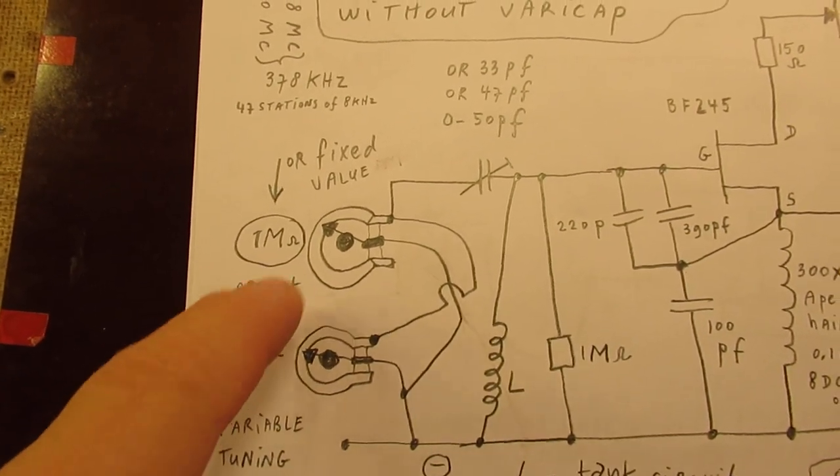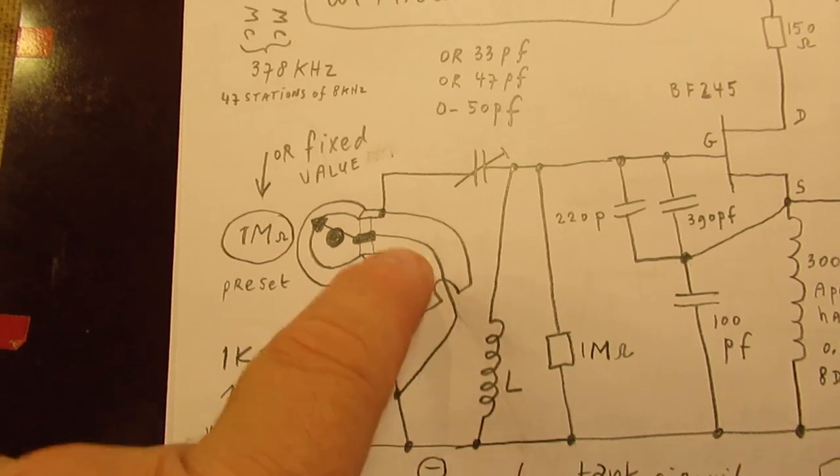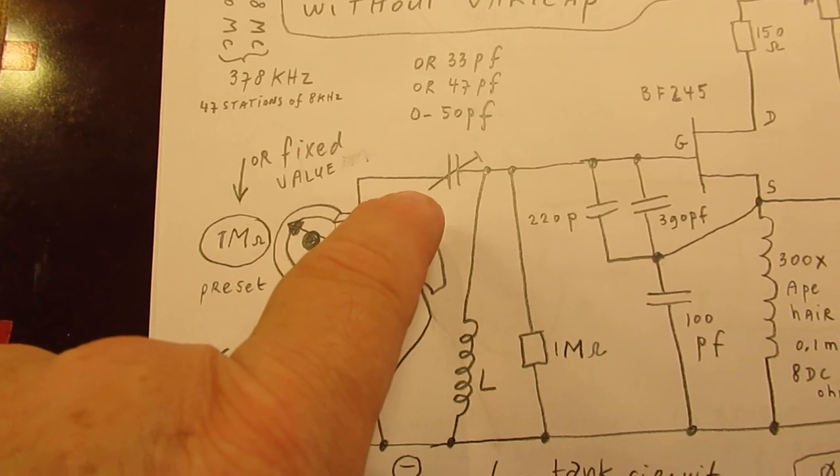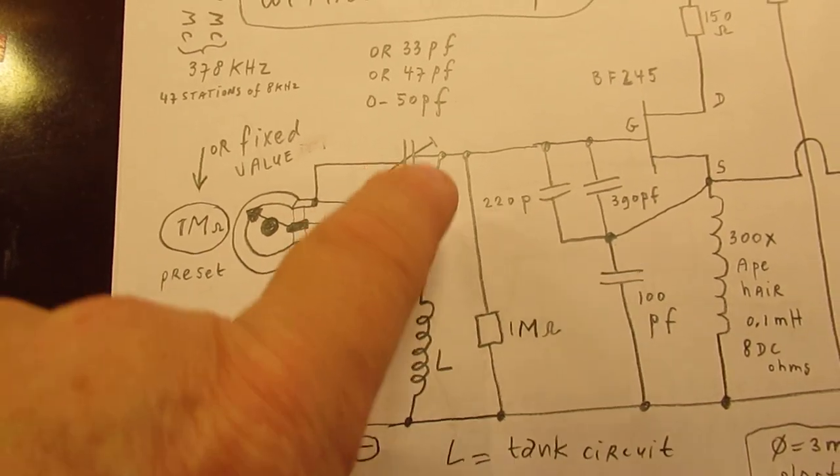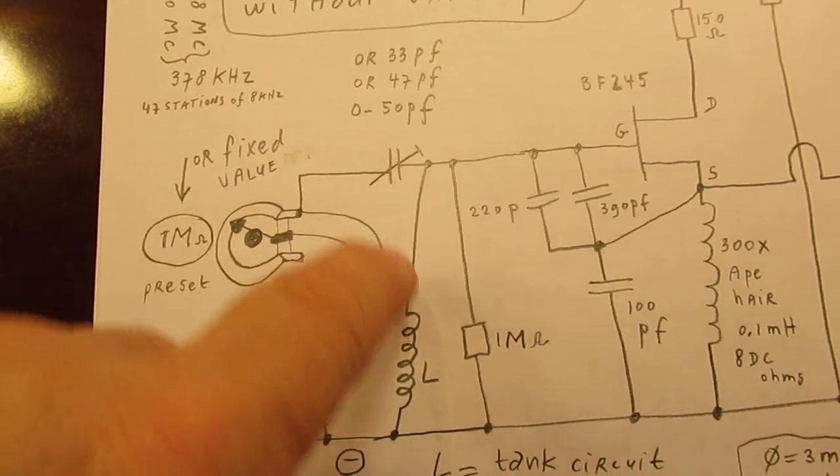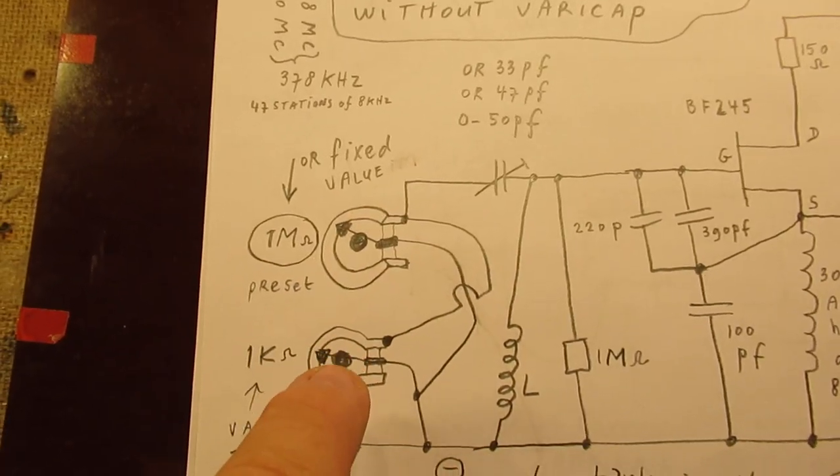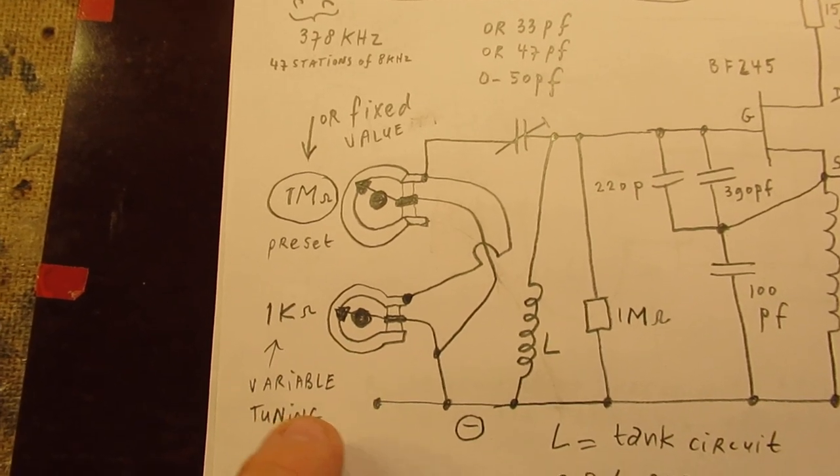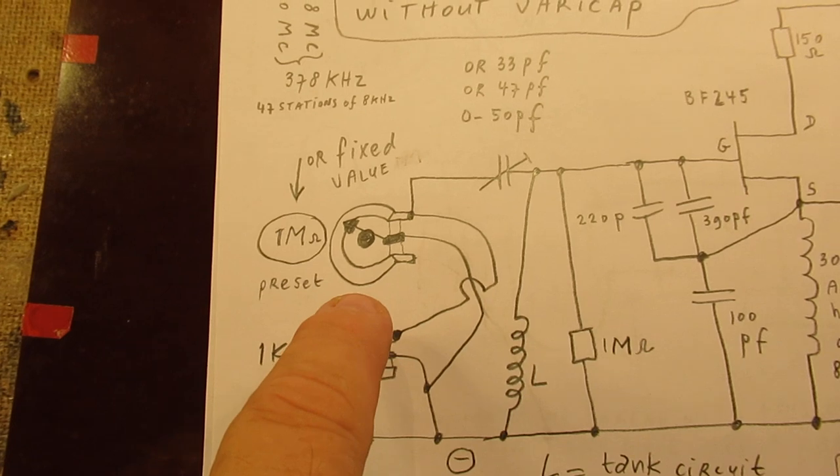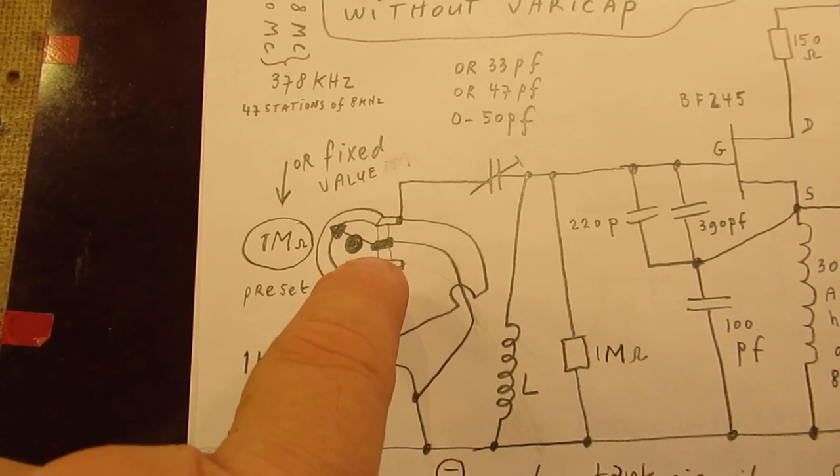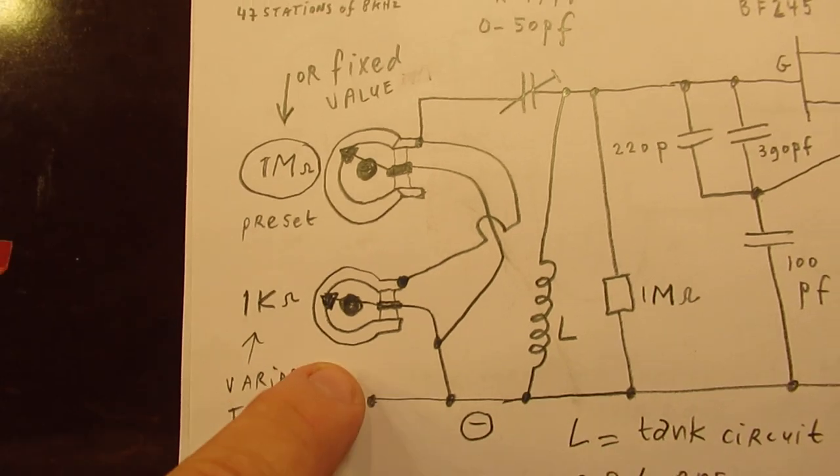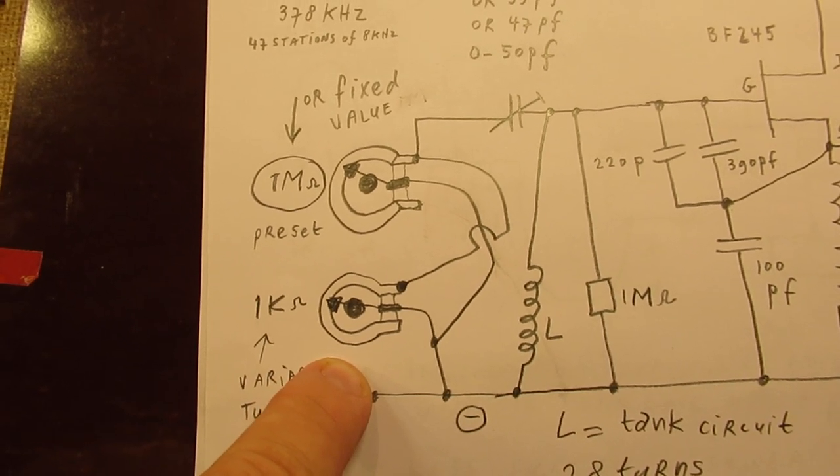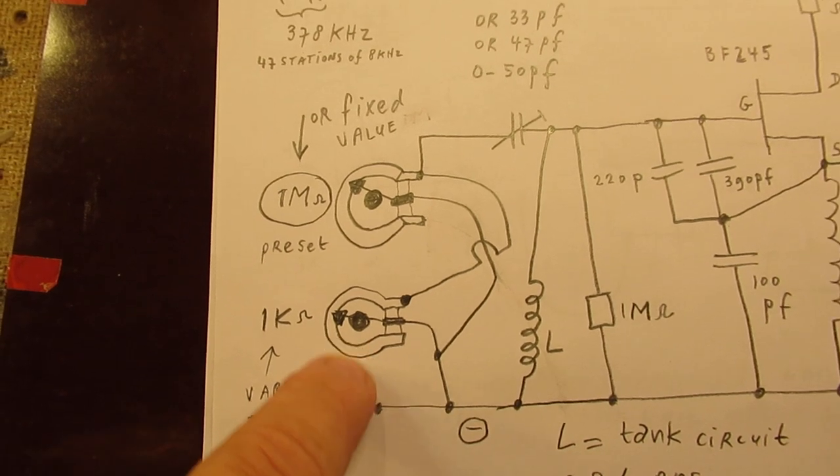The peculiar thing is that we have here a 1 megaohm resistor that is connected from the trimmer to ground. This is the tank circuit. These two values here set the frequency from the trimmer to ground. Another variable potentiometer varies within this range that is set here by this one.